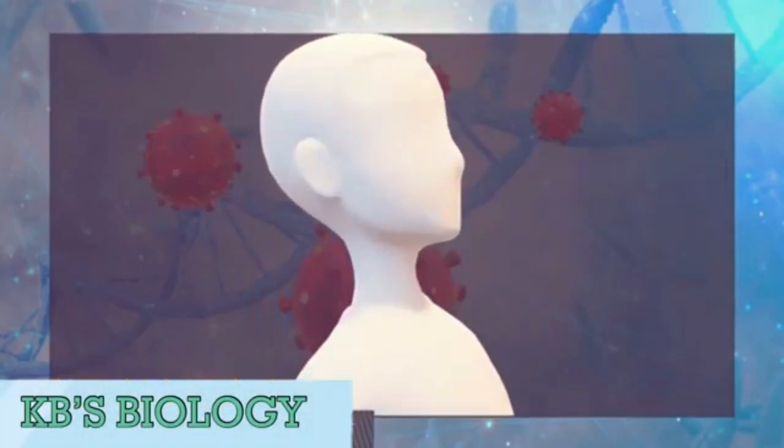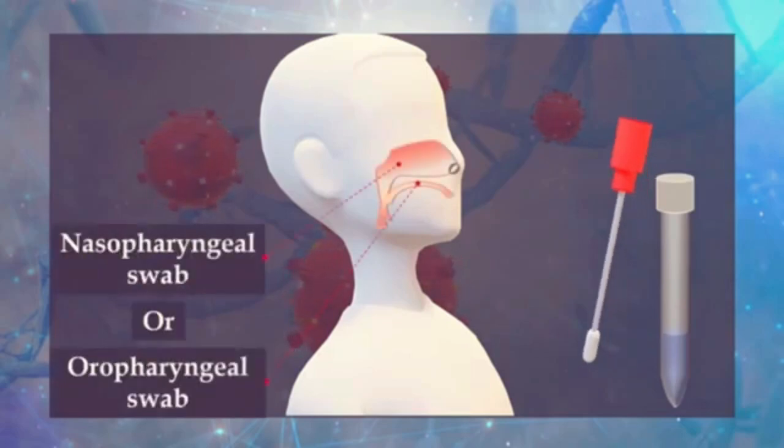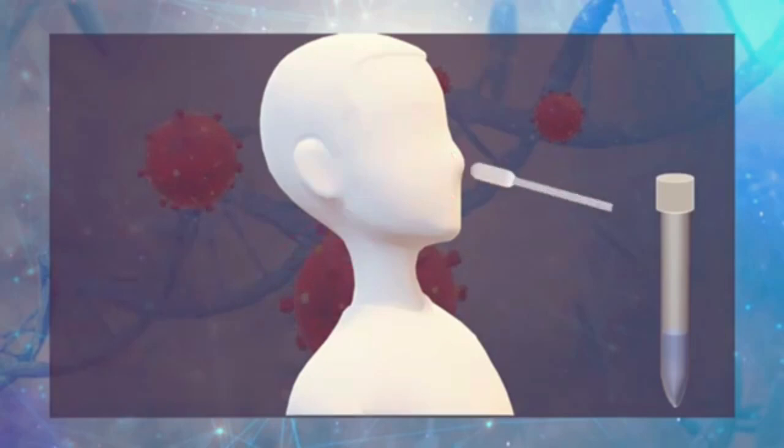To start a test, the samples can be collected by a nasopharyngeal swab or an oropharyngeal swab. For nasopharyngeal specimen, the swab is inserted in the nostril and gently moved forward into the nasopharynx, then it is rotated for a specified period time to collect secretions that contain the virus.